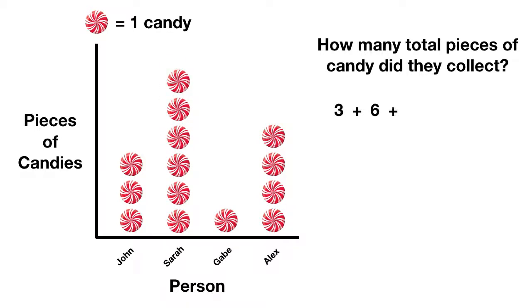Next, we add in Gabe, who got one. And finally, we can add in Alex, who got one, two, three, four. Now we can add this all up. What does three plus six plus one plus four equal? If you add it all up, you'll get 14.